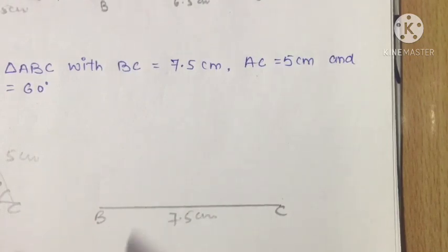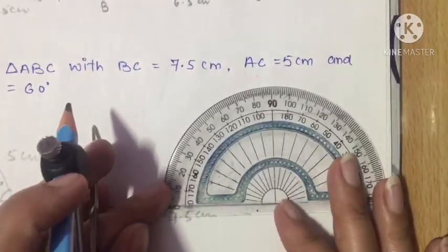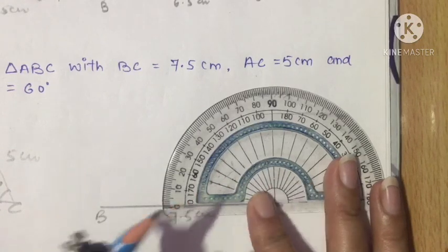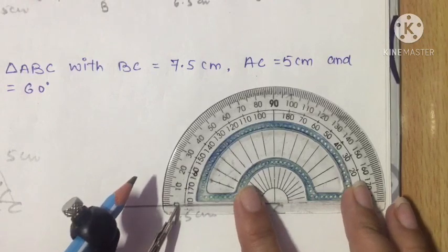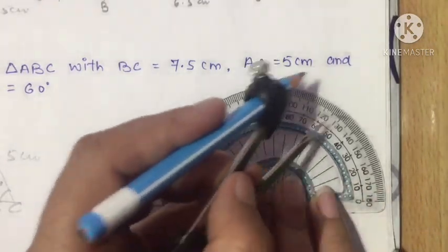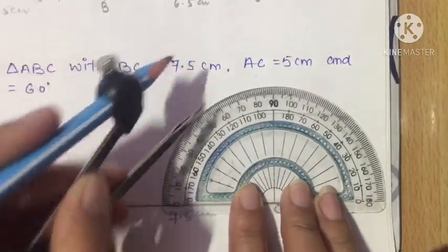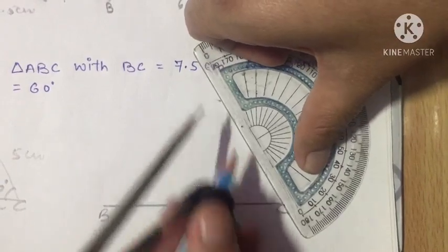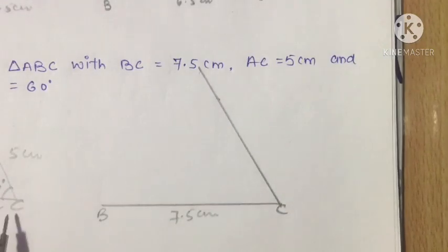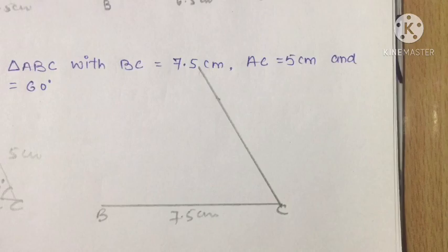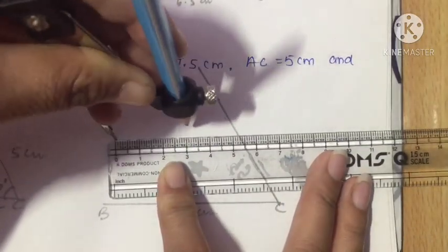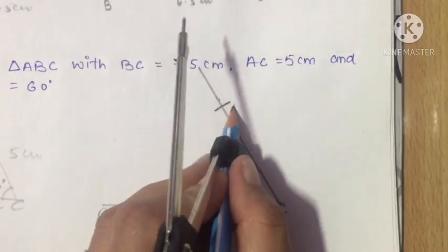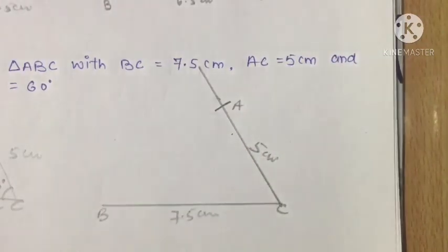At C, I have to make an angle of 60 degrees. You can use a protractor — draw the baseline along this line and at endpoint C. Using the upper scale of the protractor, mark 60 degrees. Draw the ray at 60 degrees. Now A will come along that ray at 5 cm from C.